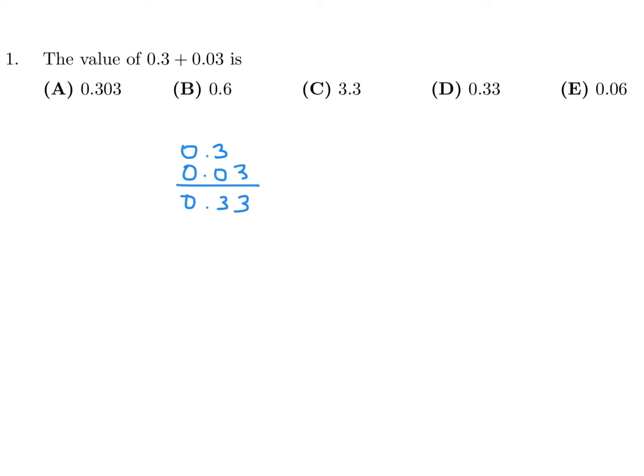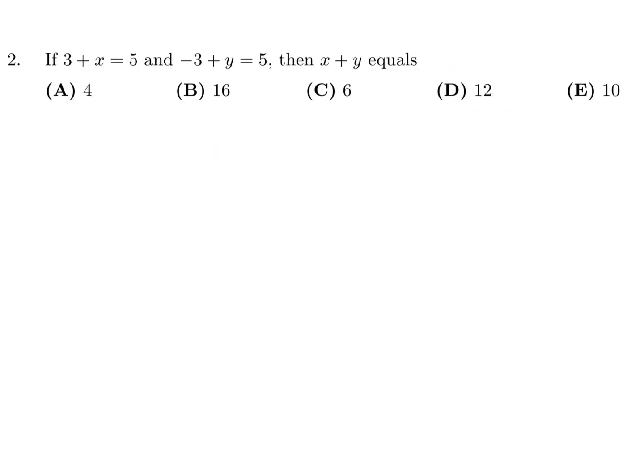3 plus x equals 5, minus 3 plus y equals 5, find x plus y. If 3 plus x equals 5, then x equals 2. If minus 3 plus y equals 5, add 3 to both sides and you get y equals 8. Therefore x plus y would be 2 plus 8, which is 10, and the answer is E.